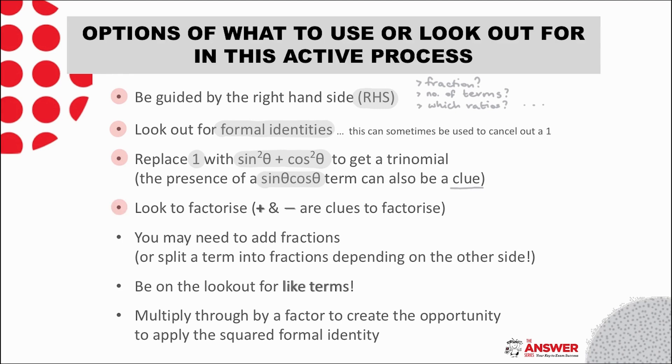Next, if there are terms then look to factorize. Then you may need to add fractions or split terms depending on the other side. Remember always to be on the lookout for like terms. And then there is the trick of multiplying through by a particular factor that creates the opportunity to then apply the squared identity. We illustrate this option in one of the worked examples to follow.